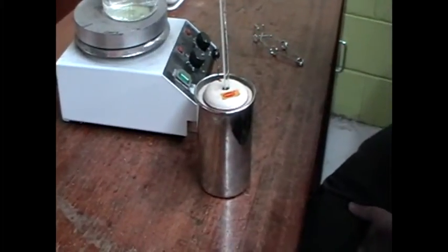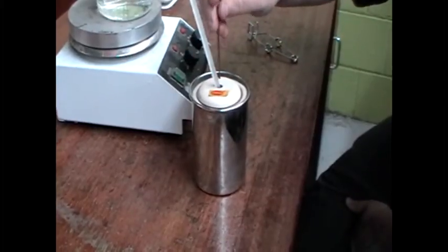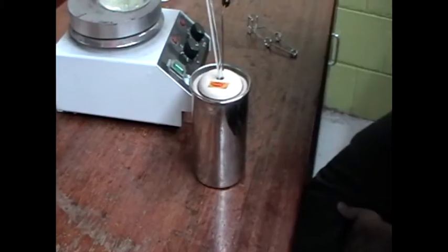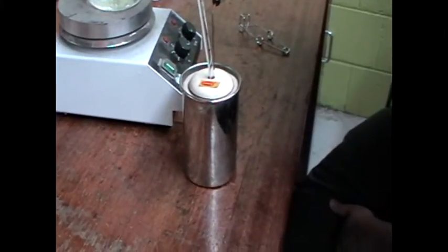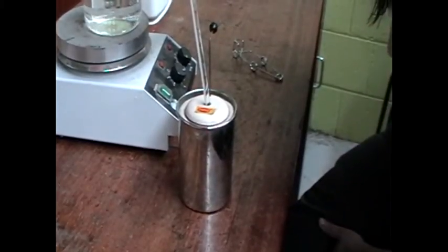Place the thermometer in the calorimeter. Stir. Avoid the error of parallax when reading the thermometer. The final temperature of the water, calorimeter, and copper is 20 degrees.